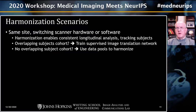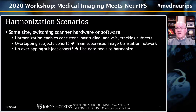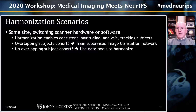What are some of the scenarios that are important for harmonization? One scenario is same site but switching the scanner hardware or software, and you'd like consistent analysis for longitudinal tracking of subjects. If you have an overlapping cohort, it's possible to train a supervised image translation network directly. But if you don't have overlapping subjects, you still have available pools of data from before and after that you can use for harmonization, and a common approach would be to apply a CycleGAN.